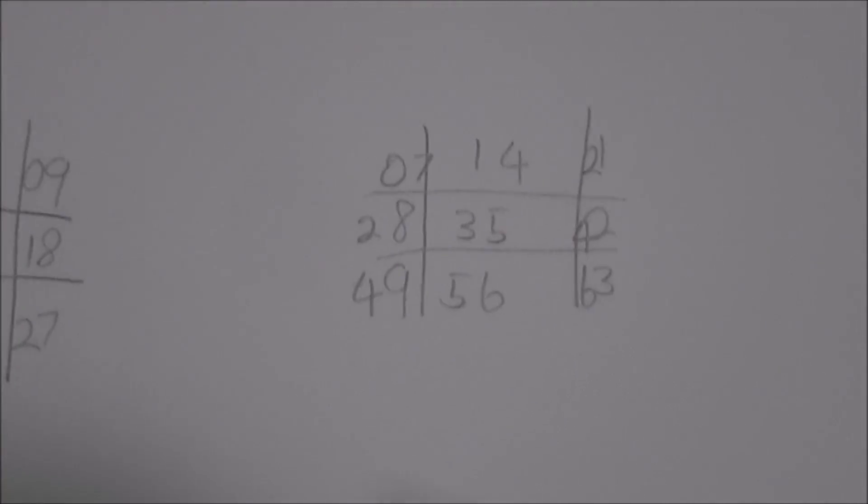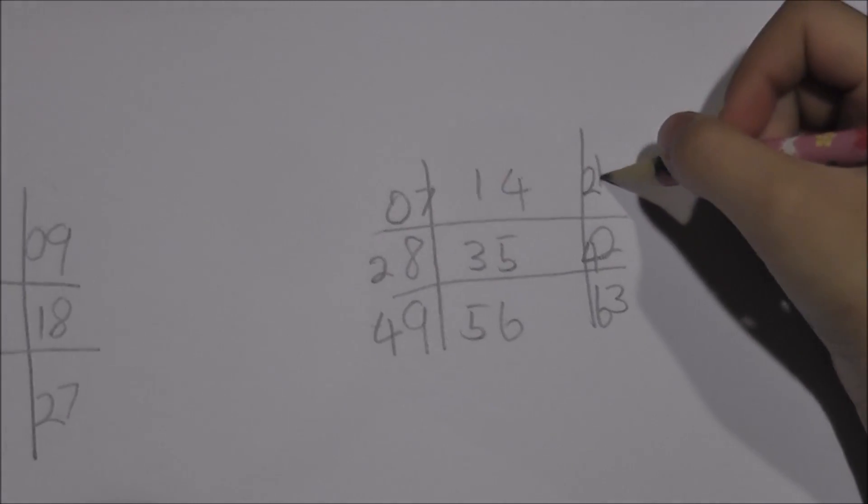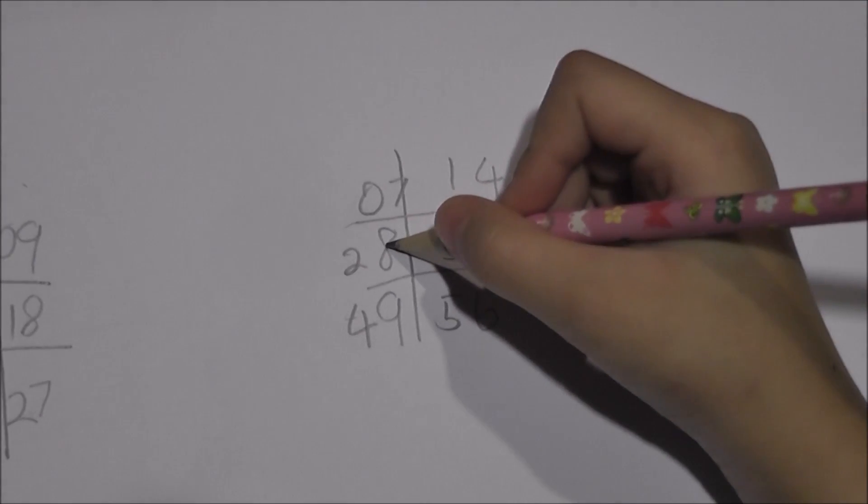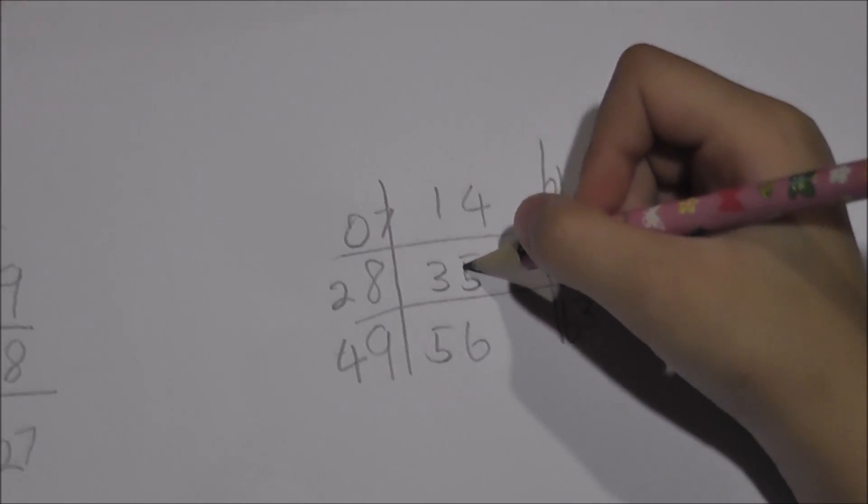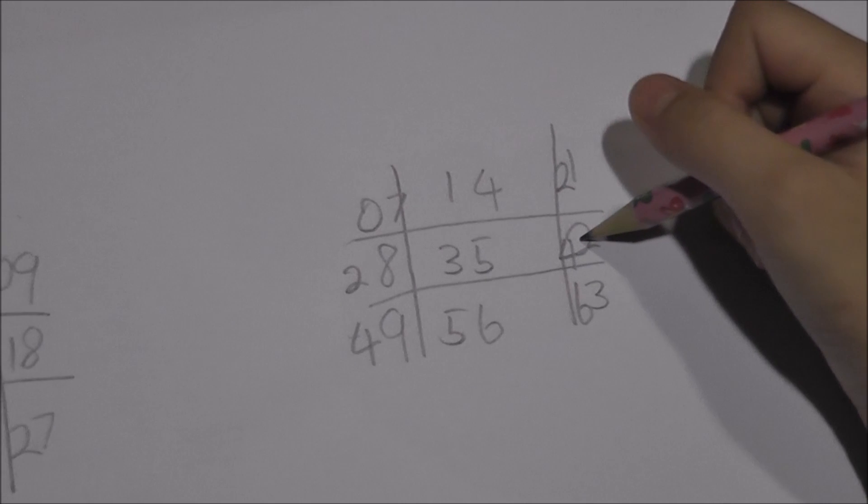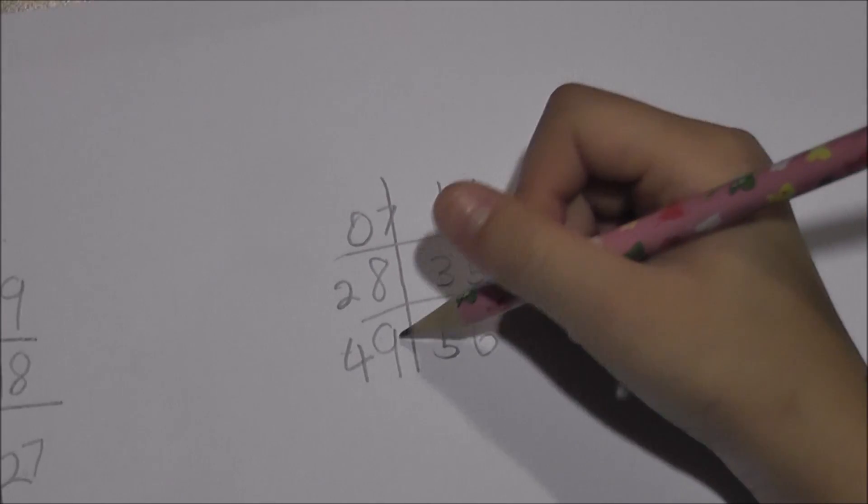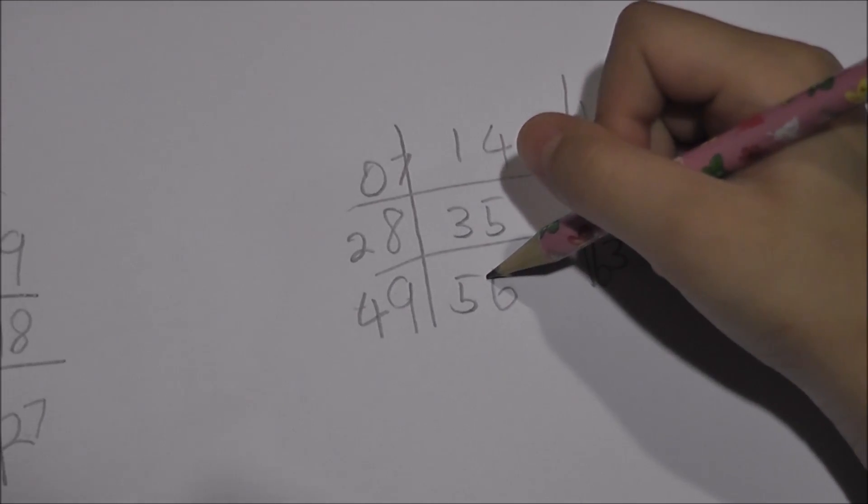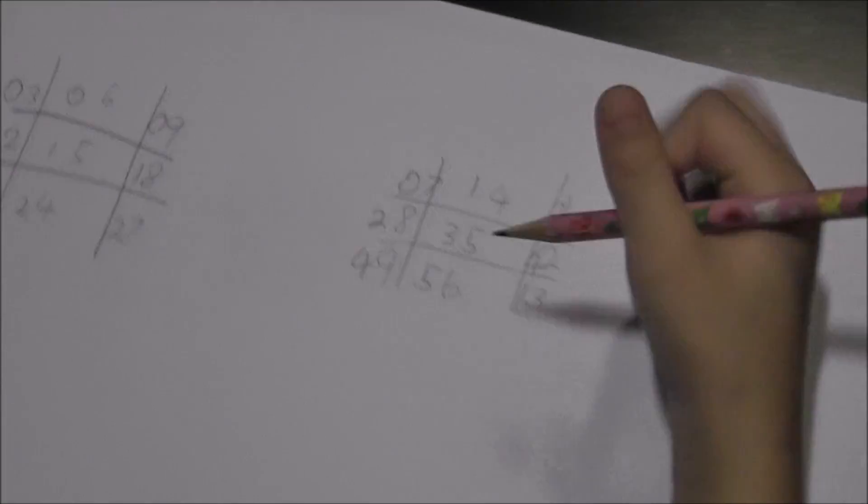Okay, I'm going to count it now. 7, 1, 7. 7, 2, 14. 7, 3, 21. 7, 5, 28. 7, 5, 35. And 7, 6, 42. 7, 7, 49. 7, 8 is 56. 7, 9, 63. And then, 7, 10 is 70.